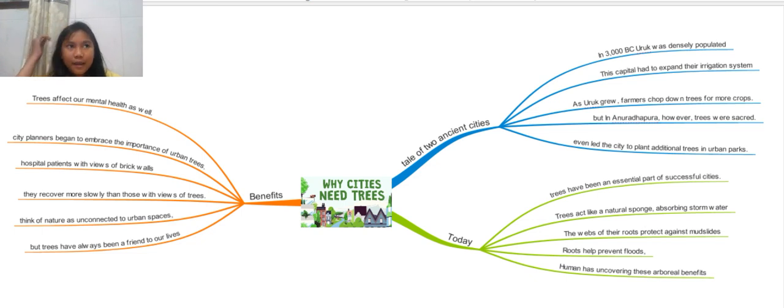This is a pretty fun topic. We're going to go through a tale first. In 3000 BC, there was a city called Urk. It was a densely populated city.